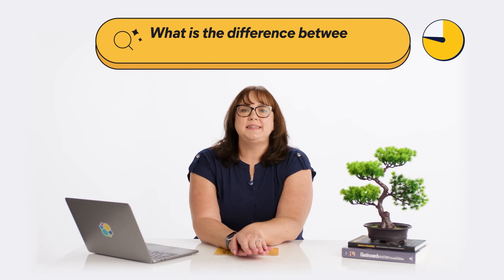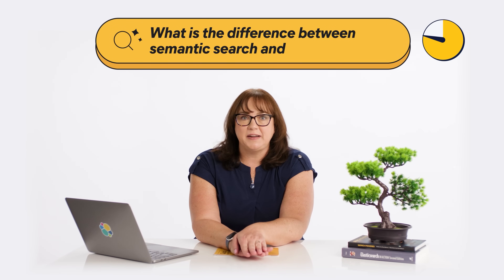What is the difference between semantic search and vector search? Semantic search is the underlying meaning and intent behind your query, while vector search searches on mathematical similarity between vectors. They're very different concepts, but under the hood, semantic search is powered by vector search in many cases.